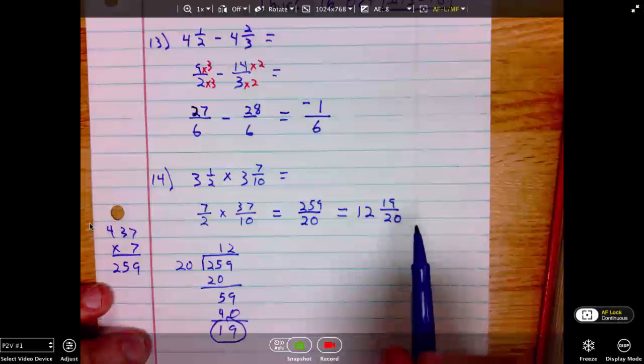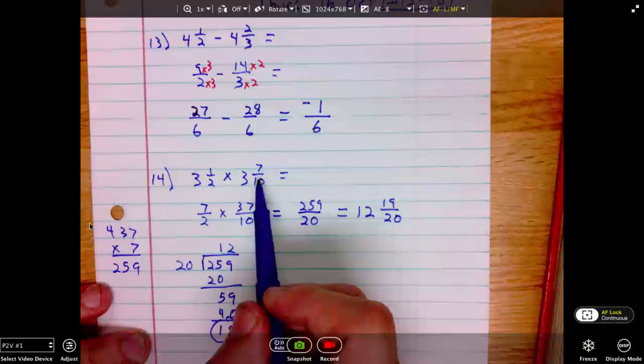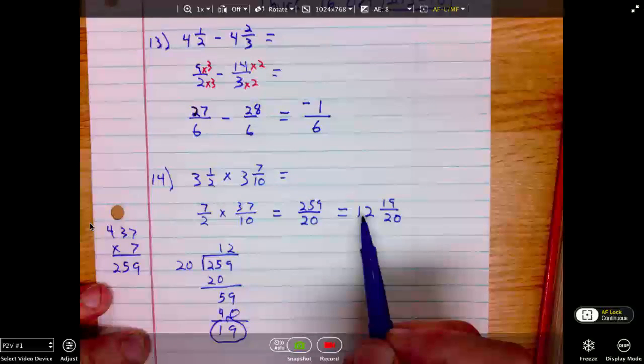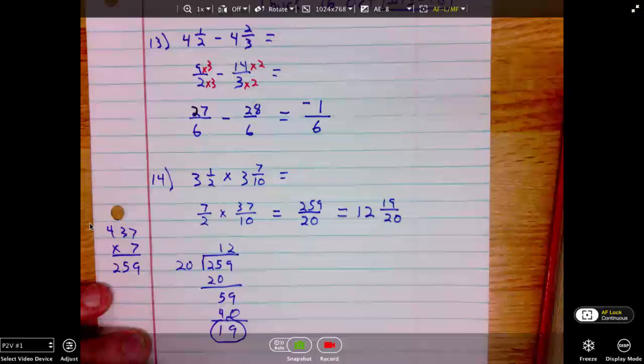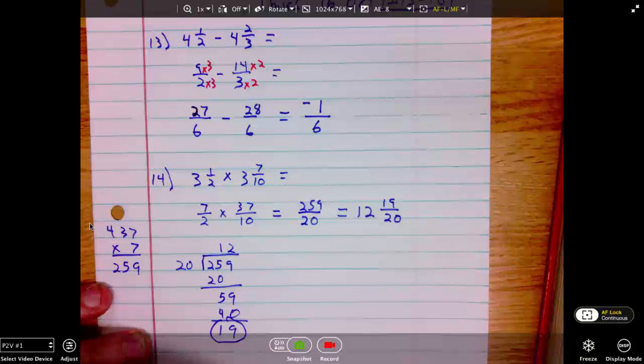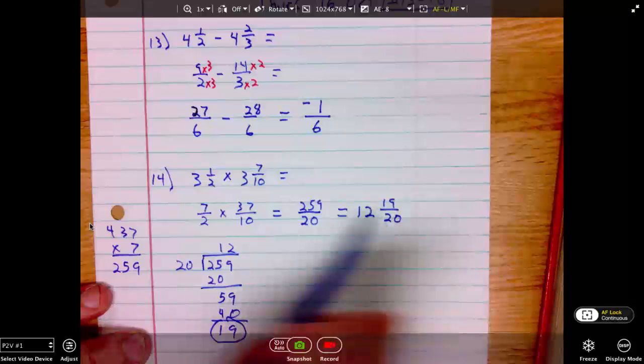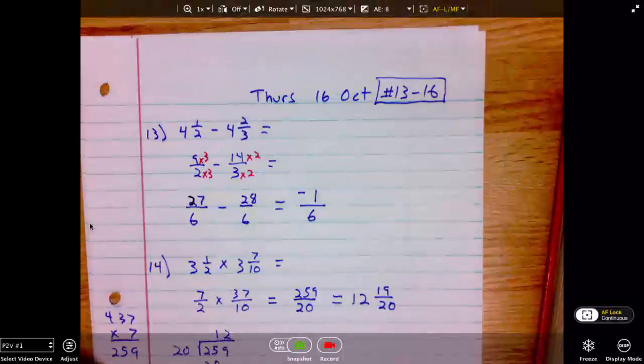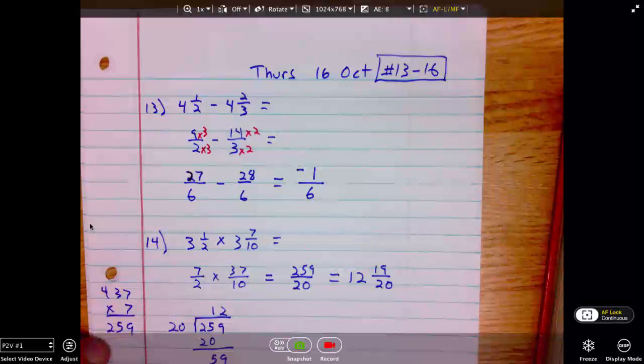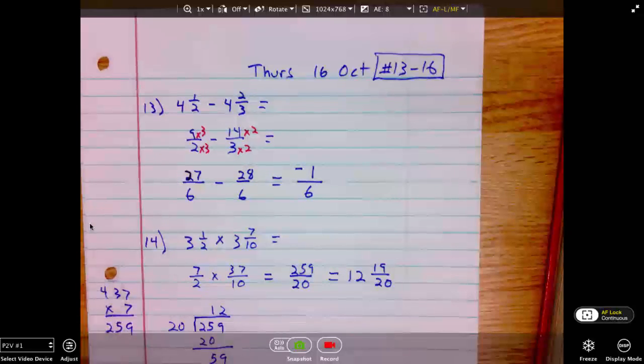Lastly, check for reasonableness. This is 3 and a half. This is closer to 4. So, 3 times almost 4 is 12. 12 and a little more than that. So, this answer, 12 and 19 over 20, is a reasonable product for these two factors. Alright, now with those two problems from Thursday, you should be able to work 15 and 16. Thank you.